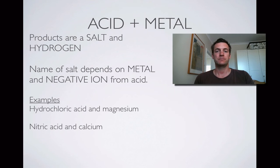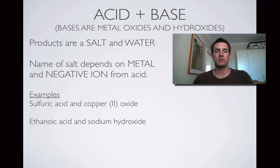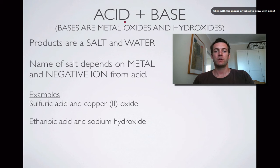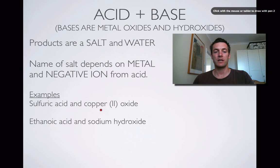Moving on to the next group: acids reacting with bases. Bases in general are metal oxides and metal hydroxides. They can sometimes be solids in the case of metal oxides, or metal hydroxides which are sometimes solids or sometimes solutions. Regardless, if you react one with an acid you're going to make a salt and water. Naming the salt is exactly the same as with metals — you still put the metal in front of the negative ion from the acid — but water is the other product now instead of hydrogen. So sulfuric acid and copper(II) oxide will make copper sulfate and water.